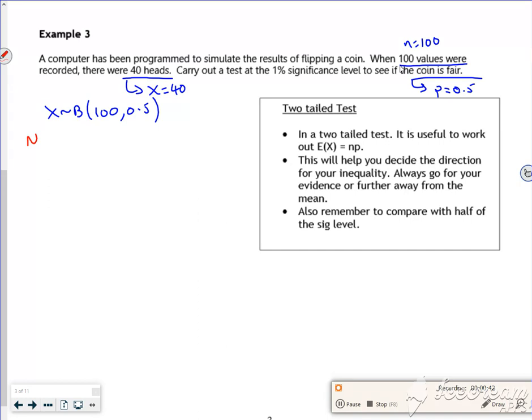My null hypothesis is H0, P is a half. Now, it's a bit vague, isn't it, seeing if it's fair. So because it's vague, it's going to be two tail.